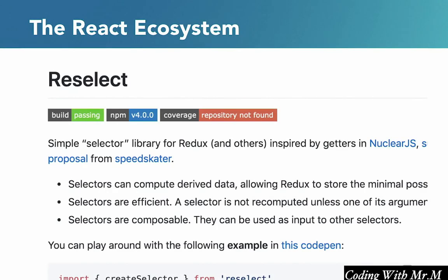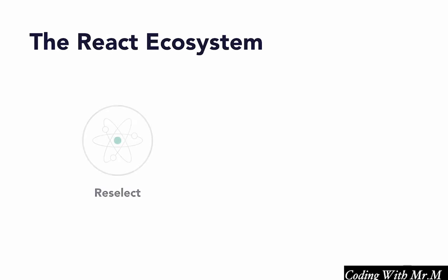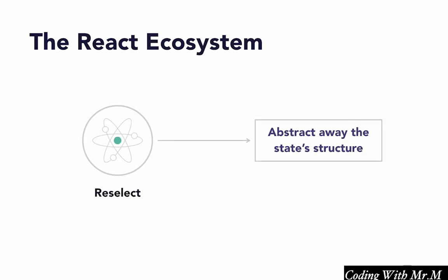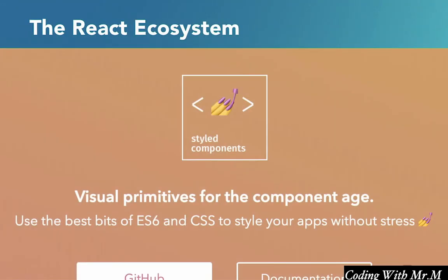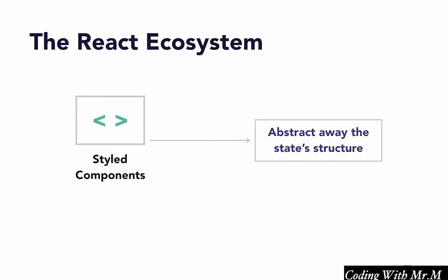Next up are selectors, and the specific library we'll be using for this is called Reselect. While Redux takes care of managing and modifying the state of the application for us, the purpose of selectors is to abstract away the details of how our data is stored in the state. And after that, we have what are called styled components. Styled components give us a nice way of styling our components. That is, they give us a nicer way of managing the appearance of our components than using separate CSS files, particularly when the appearance of a component depends on the state in some way. You'll get a much closer look at how this works later on in the course.